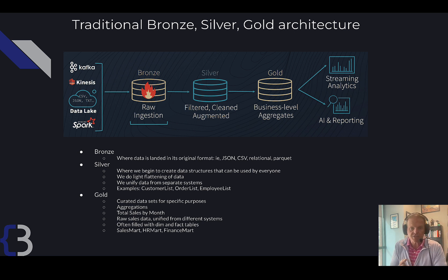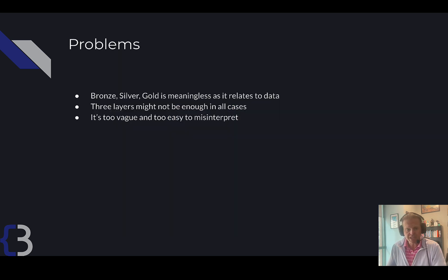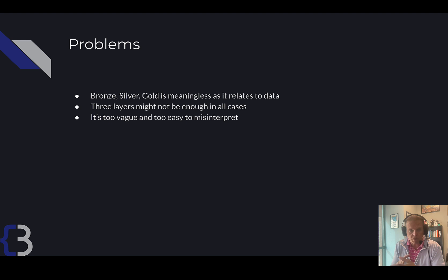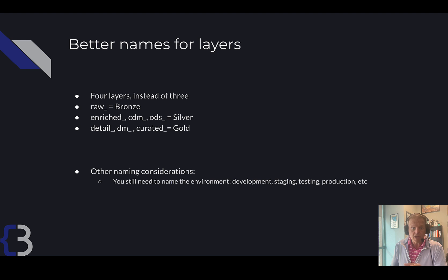That is the basic medallion architecture that Databricks has talked about for a long time. Now there are problems with it. The words bronze, silver, and gold are meaningless as they relate to data — you have to teach what those words mean to everybody who uses them. Three layers might not be enough in all cases; you might need more layers. I've seen as many as six or seven layers in a lakehouse architecture. It's too vague and easy to misinterpret.